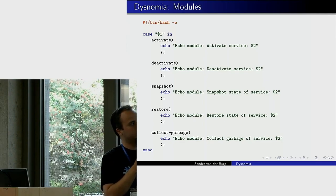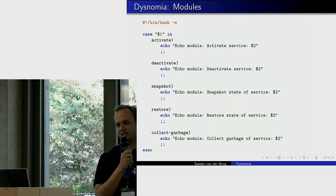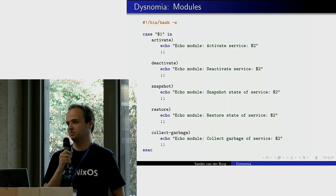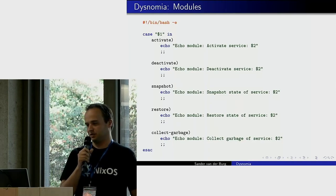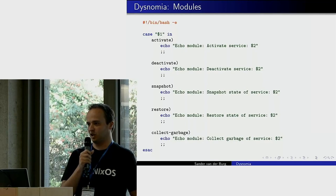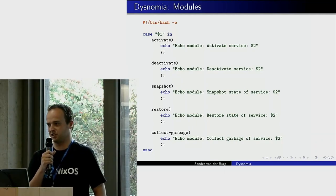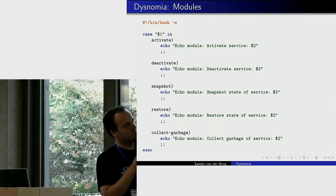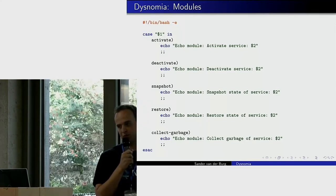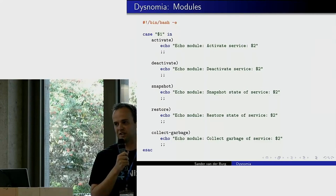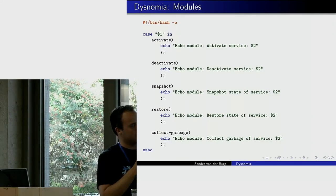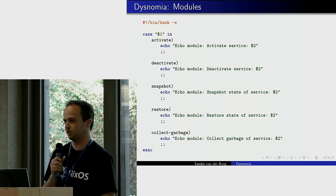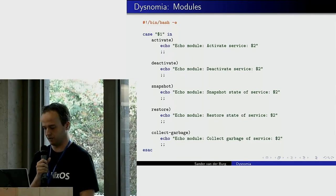Deactivation for a database typically means not removing the database but marking it as obsolete. This mirrors how Nix works — in Nix there are no deletes; you de-install packages from the profile and the garbage collector decides what to remove. In Dysnomia we do the same: mark the database as obsolete, and a collect garbage operation will actually remove it if it's no longer necessary. You can also manage snapshots and restores — snapshots run mysqldump, and restore brings the database back.